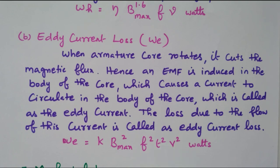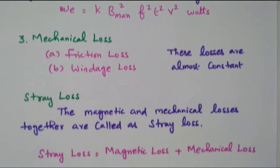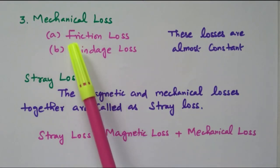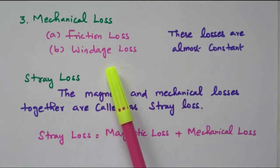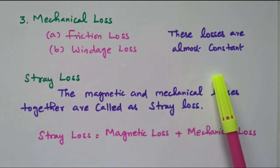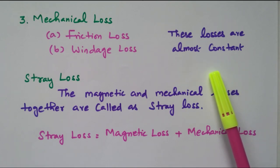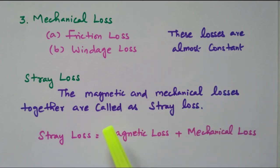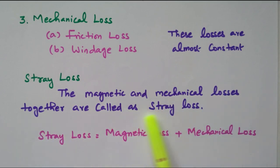The third loss is the mechanical loss — friction loss or windage loss. These losses are almost constant. So: first, copper loss; second, iron loss; third, mechanical loss. The second and third are almost constant. Iron loss and mechanical loss are constant. One more classification is available: stray loss. The magnetic and mechanical losses together are called stray loss.